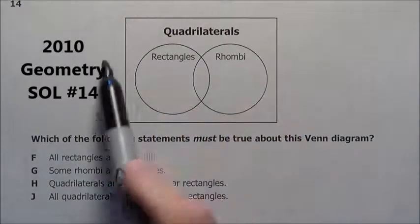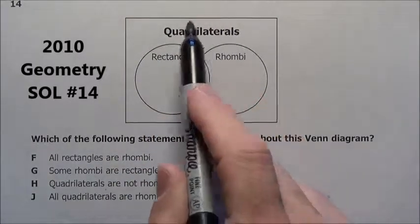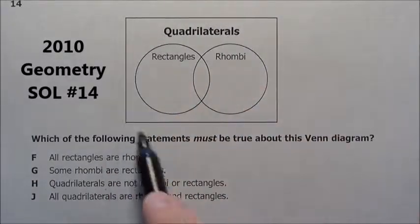Here we go with problem 14. It has this picture of quadrilaterals. So everything in this big rectangle is a quadrilateral.